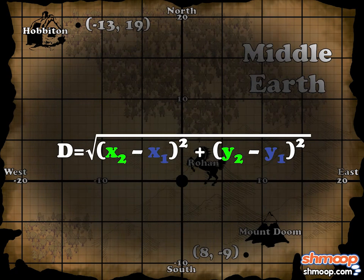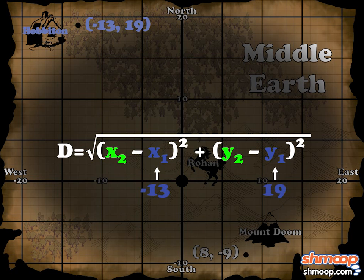Frodo and his friends start out in Hobbitown, so that's our first point. x1 equals negative 13, and y1 equals 19. They want to get to the other endpoint, Mount Doom. So x2 equals eight, and y2 equals negative nine.